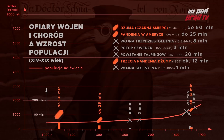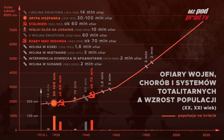Widzimy na przykład dżumę Justyniana z VI wieku — szacuje się, że zmarło nawet 25 milionów ludzi. Dżuma czarna śmierć podczas średniowiecza — nawet do 50 milionów ofiar. Wojna trzydziestoletnia z XVII wieku — około 8 milionów ofiar. Potop szwedzki — mówi się o 3 milionach ofiar, a populacja Polski spadła prawie o połowę. Jeśli chodzi o wiek XX: I wojna światowa — 14 milionów ofiar, grypa hiszpanka — nawet do 100 milionów ofiar, wielki głód na Ukrainie — 10 milionów ofiar, II wojna światowa — 60 milionów ofiar, ofiary stalinizmu — około 60 milionów, ofiary chińskich komunistów, w szczególności Mao Tse-Tunga — około 70 milionów ofiar.